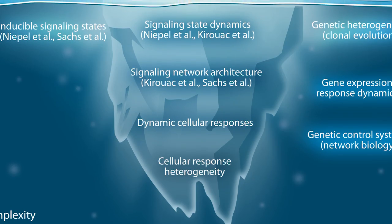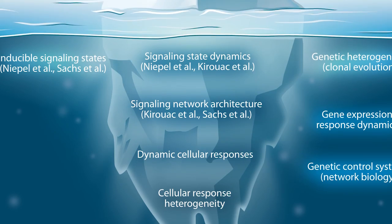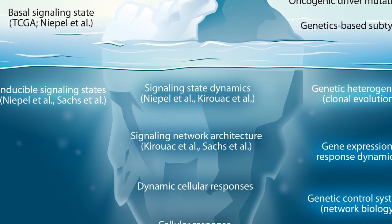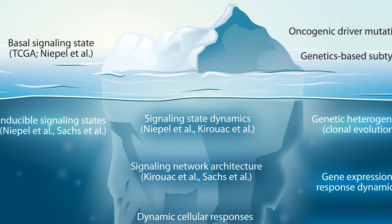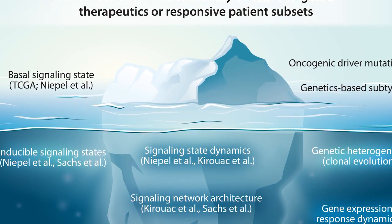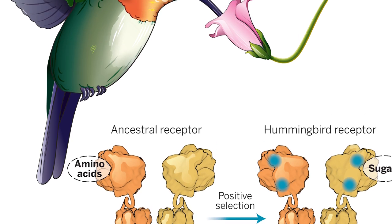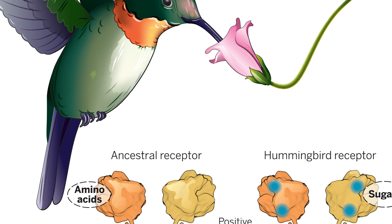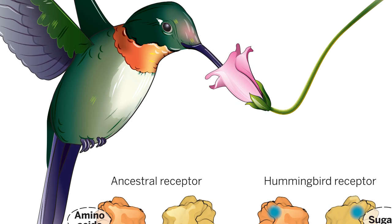The subject matter and the complexity determines what program I start using. Illustrator is a vector program, so it's good for schematic things and things that have flat shapes and aren't too complex.